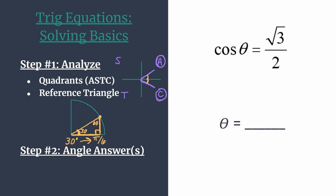Now that we've found these two pieces, we're ready to synthesize this information in step 2 and state our angle answers. For the quadrant 1 angle, since the reference angle is pi over 6, that angle is simply pi over 6 radians of rotation. You can check: if you substitute pi over 6 back into the equation, cosine of pi over 6 equals positive root 3 over 2, which is true.